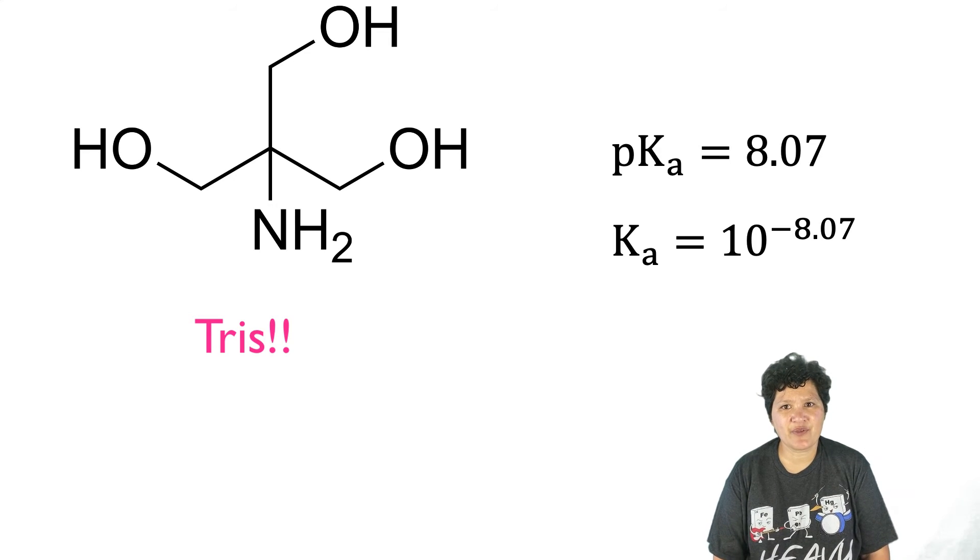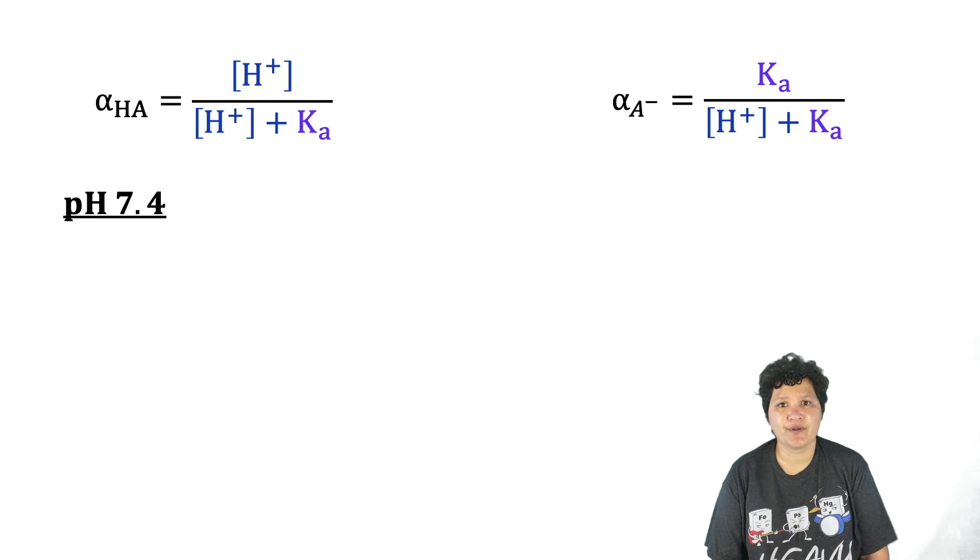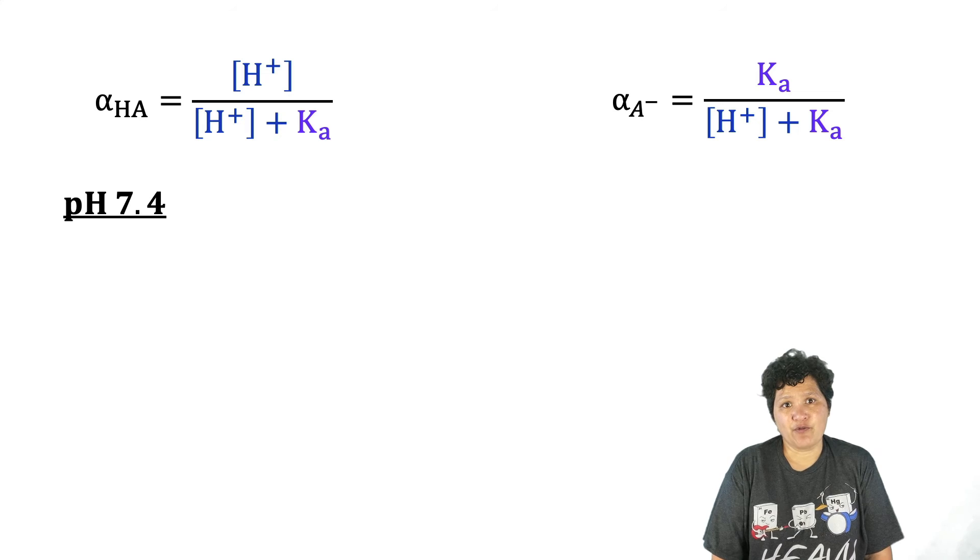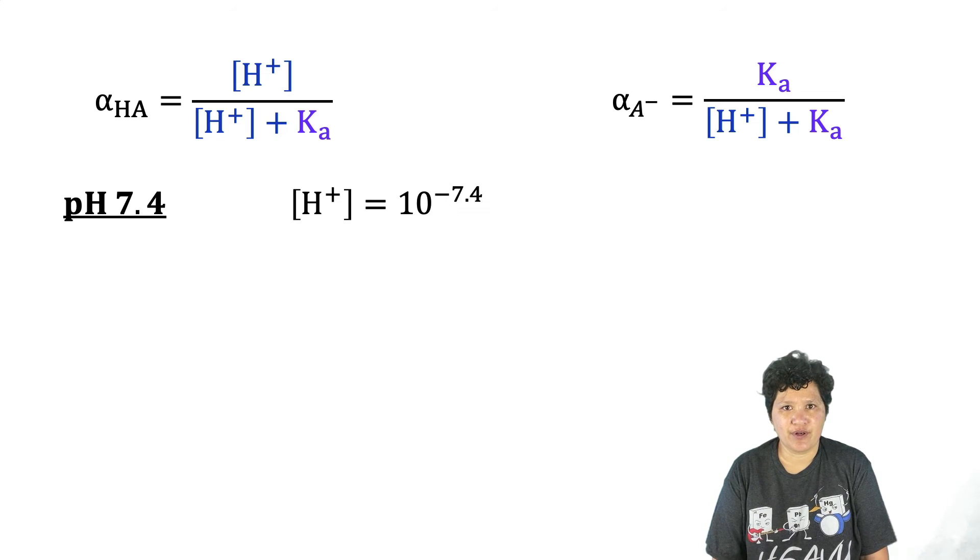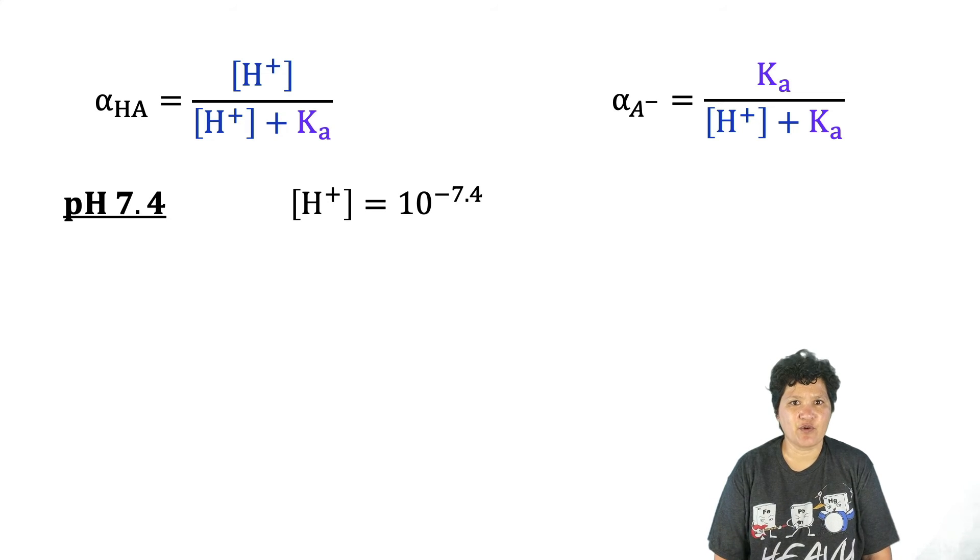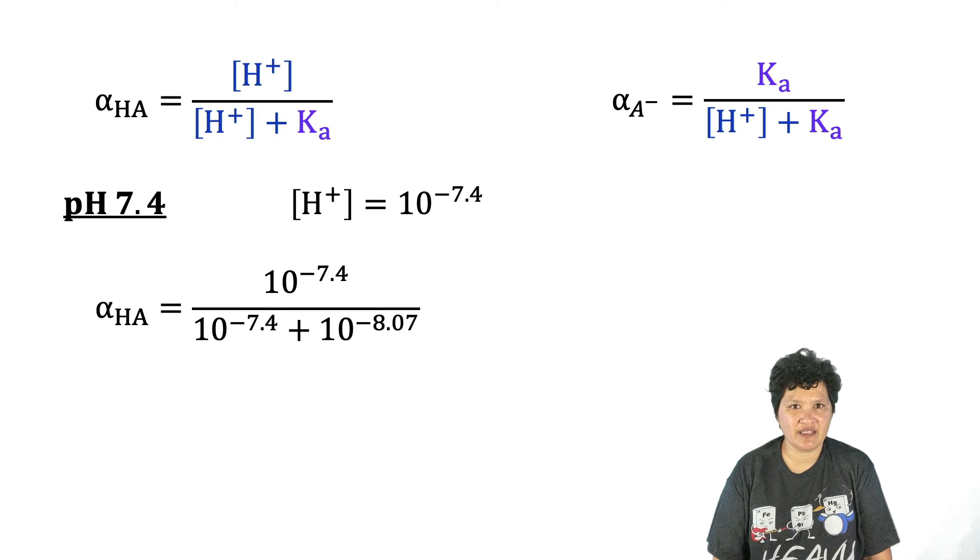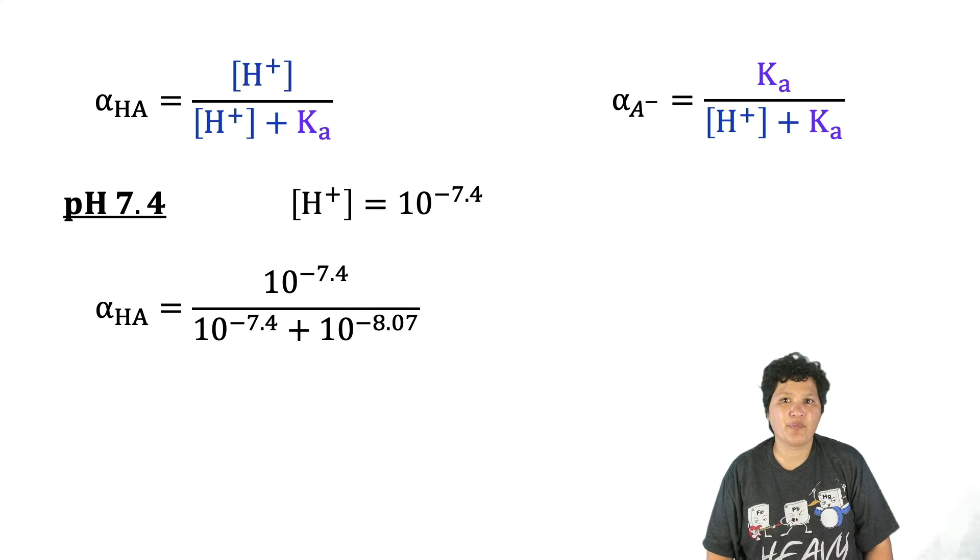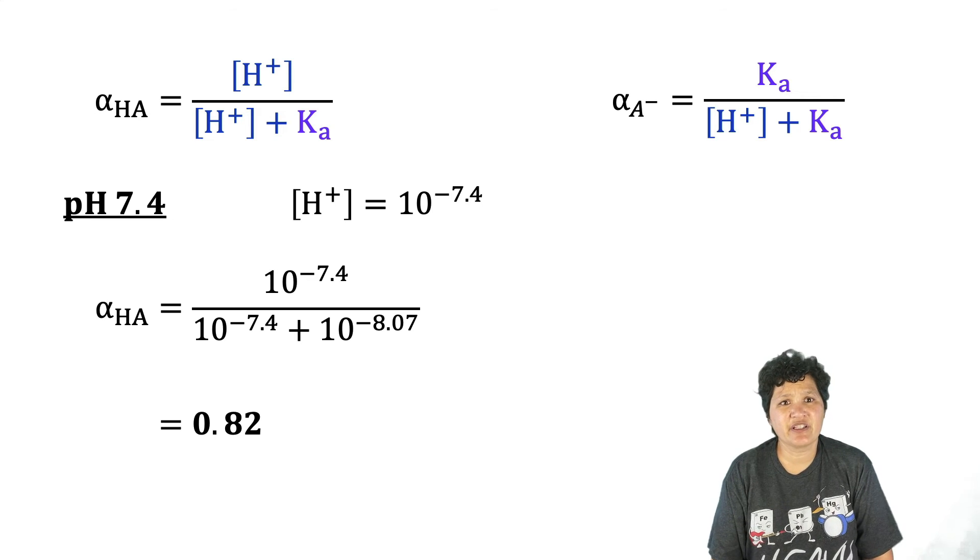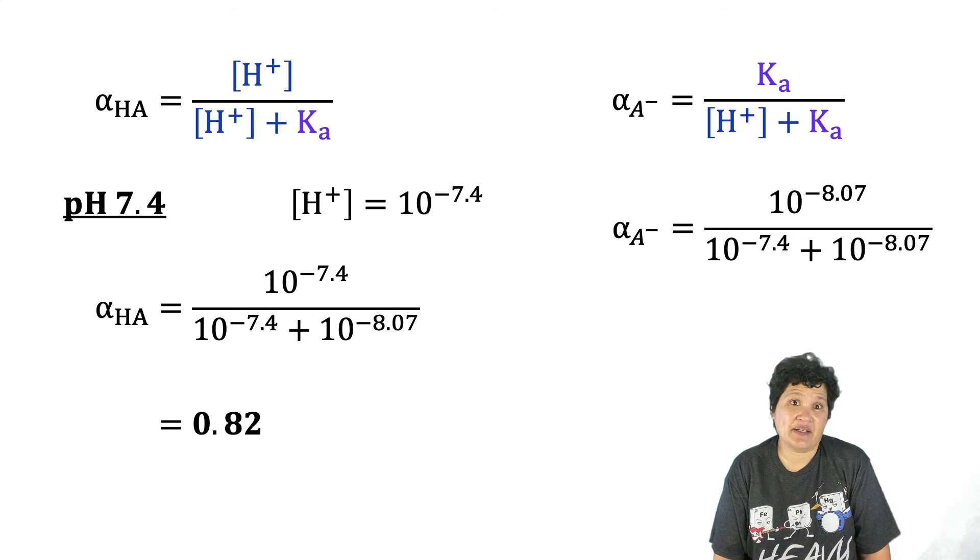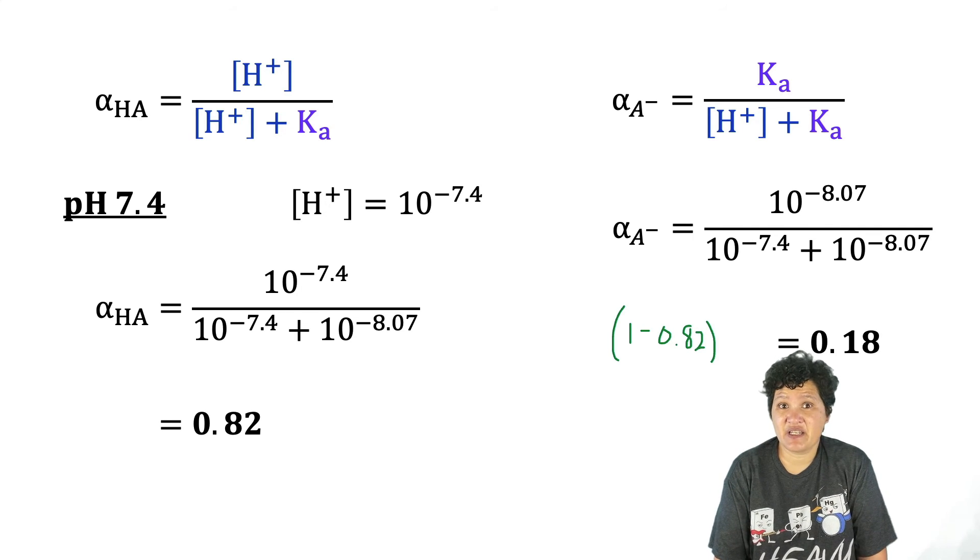Let's say we want to calculate the fractional composition of Tris and its conjugate base at two different pHs: 7.4, which mimics the pH of the human body, and 8.1, which is the current pH of seawater. We'll start with pH 7.4. At pH 7.4, the H+ concentration is 10 to the minus 7.4. So the fractional composition of Tris in its weak acid form is 10 to the minus 7.4 divided by 10 to the minus 7.4 plus 10 to the minus 8.07. That gives us a value of 0.82. You could do a similar calculation for the conjugate base form, or you could remember that the two values have to add up to one. So alpha of A- is 0.18.